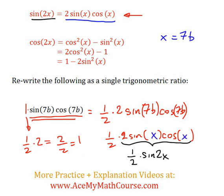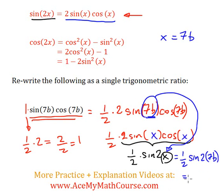But I don't want an x anymore. I just want b's. We started with 7b. So I'm going to take that and plug it into x. So that will be equal to half sine 2 times 7b. That's the same as half times sine 14b.